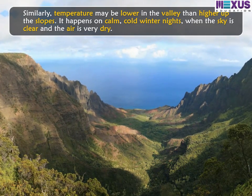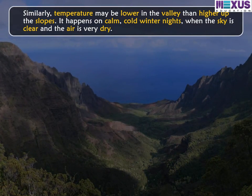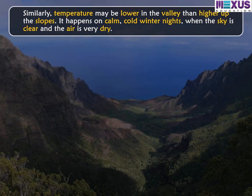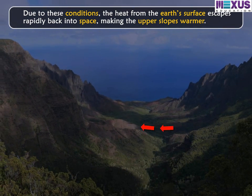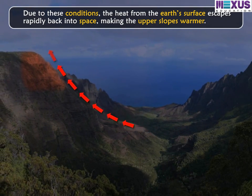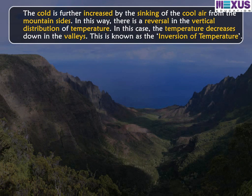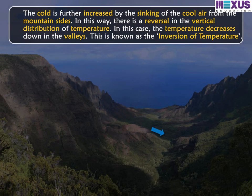Similarly, temperature may be lower in the valley than higher up the slopes. This happens on calm, cold winter nights when the sky is clear and the air is very dry. Due to these conditions, heat from the Earth's surface escapes rapidly back into space, making the upper slopes warmer. The cold is further increased by the sinking of cool air from the mountain sides. This results in a reversal in the vertical distribution of temperature — the temperature decreases down in the valleys — known as the inversion of temperature.